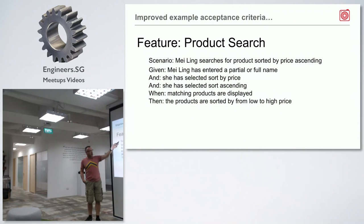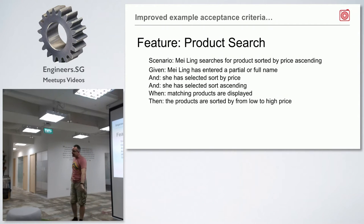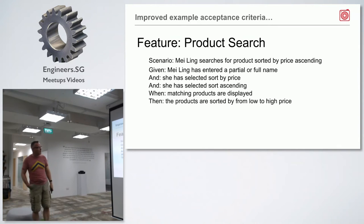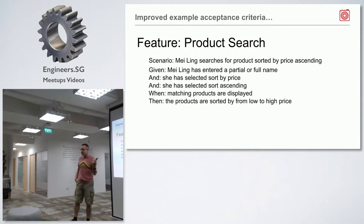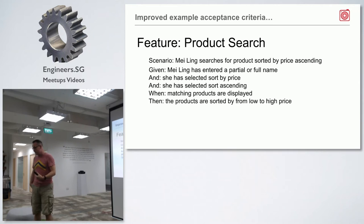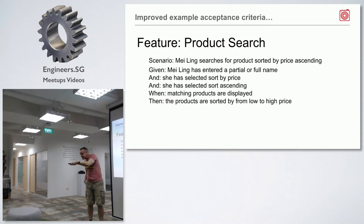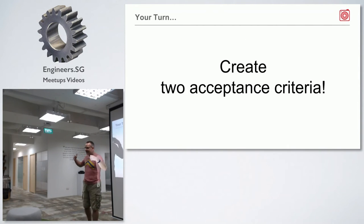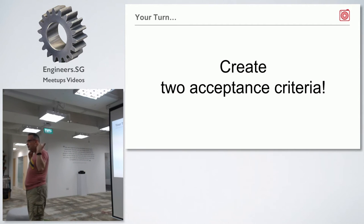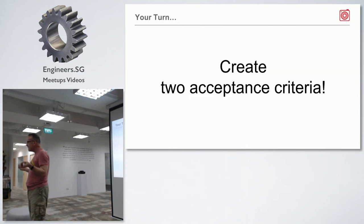This could be feature: product search by name. Product search by brand. Product search by category. These are all further refinements. Right now, mentally step back — for this feature, create two acceptance criteria in your mind, think about them, and then someone be brave enough to share them.